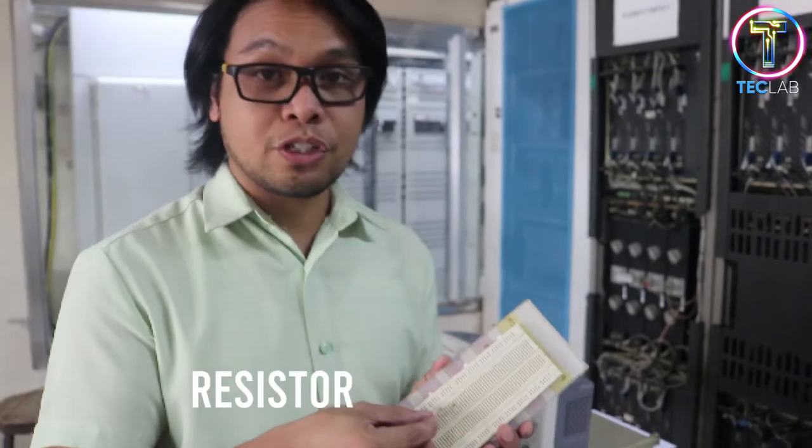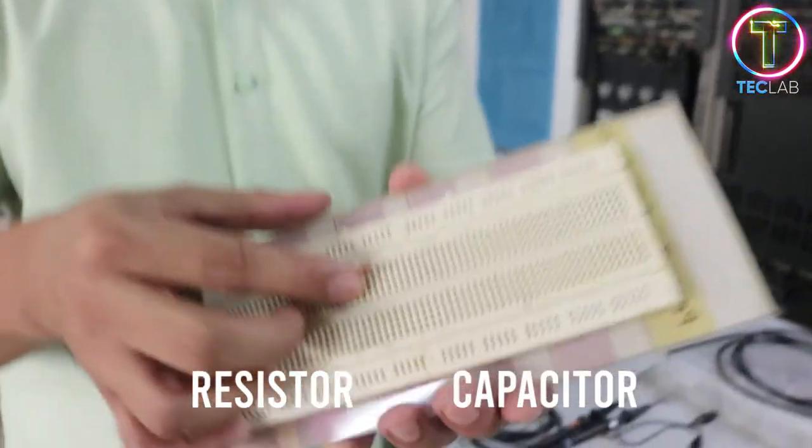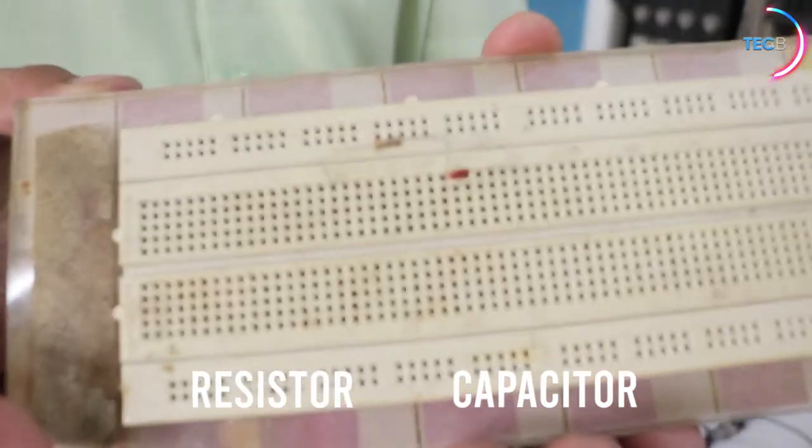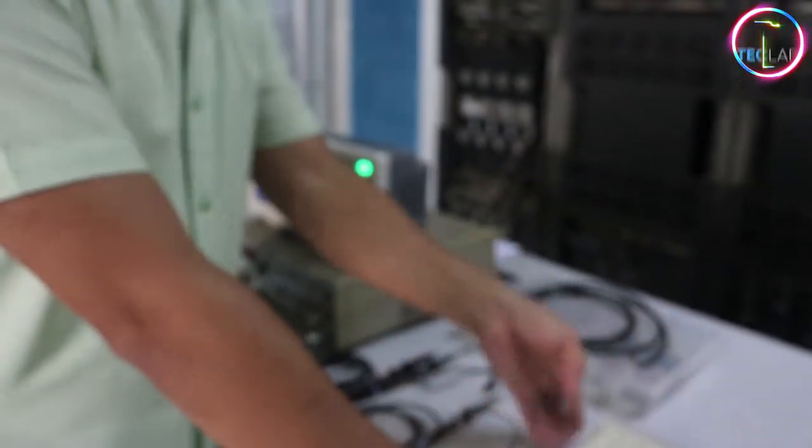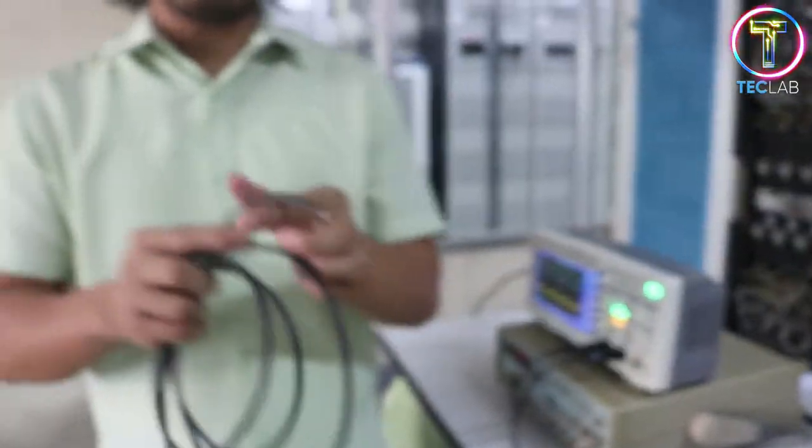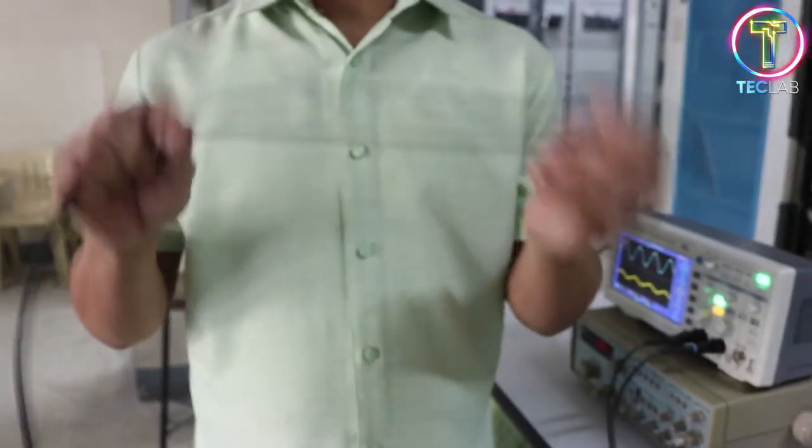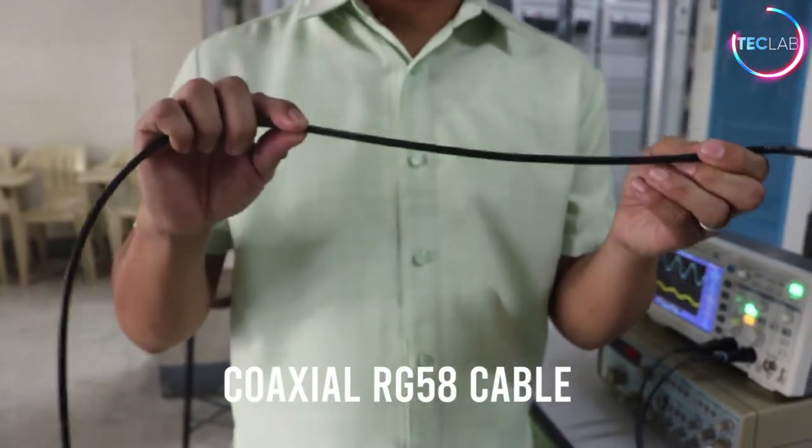and also we're going to use components such as resistor and capacitor. And a specific transmission line, which is a coaxial RG58 cable.